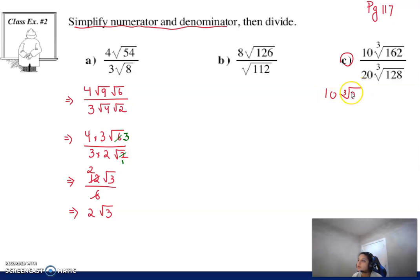So this would, you would be able to take a 27 out. That would be a perfect cube, leaving with cube root 6 over 20. And in 128, we're going to get a perfect cube root of 64, and we're left with a 2.